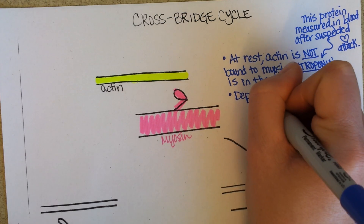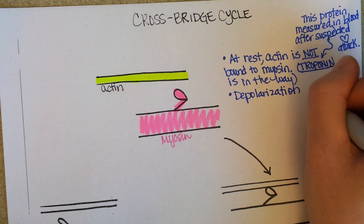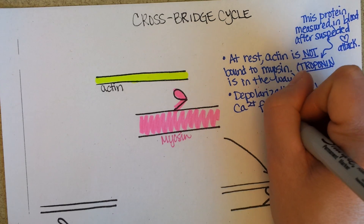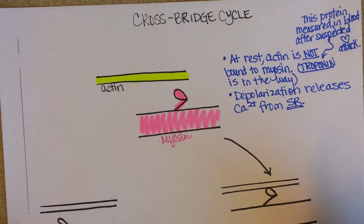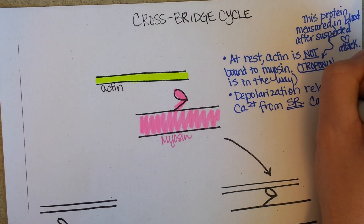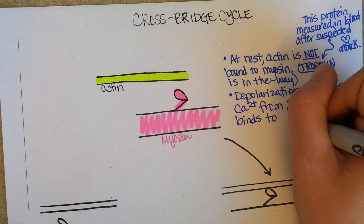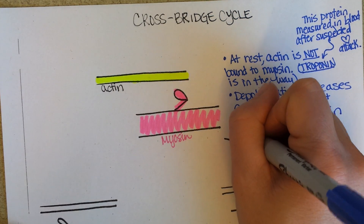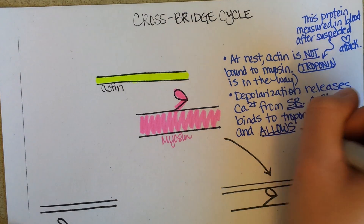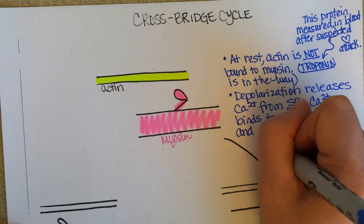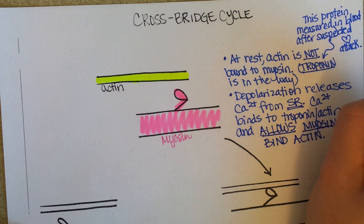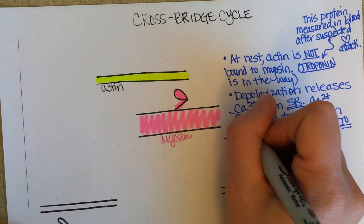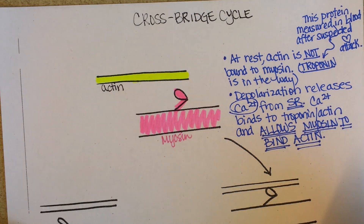Depolarization releases calcium from the SR — the sarcoplasmic reticulum. That released calcium binds to the troponin and the actin. Here's the big key point: calcium allows myosin to bind actin. What allows myosin to bind actin? Calcium does. That's the key take-home idea.